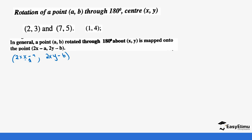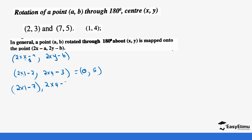Applying the formula to point (2, 3) with center (1, 4): x-image = 2×1 − 2 = 0; y-image = 2×4 − 3 = 5. So (2, 3) maps to (0, 5). For point (7, 5) with the same center: x-image = 2×1 − 7 = −5; y-image = 2×4 − 5 = 3. So (7, 5) maps to (−5, 3).